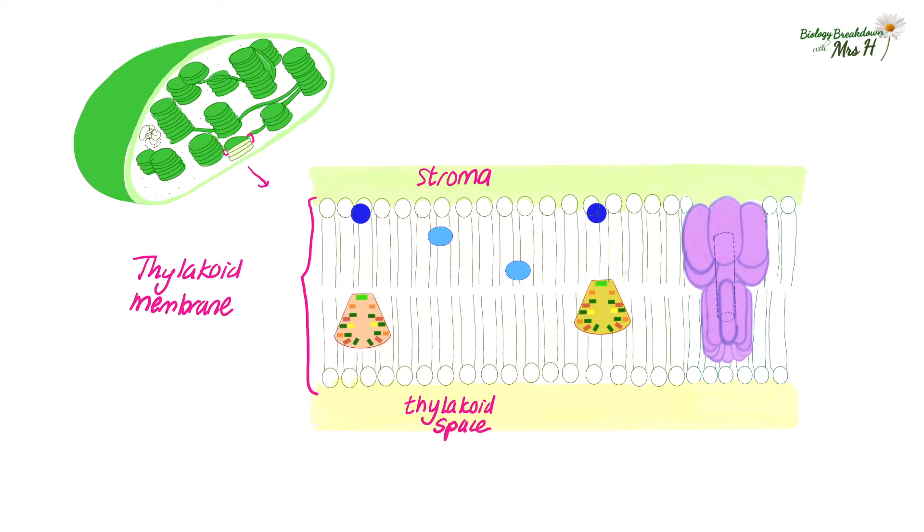Embedded in this phospholipid bilayer are two different types of photosystem, photosystem one and photosystem two. There'll be also some proteins and a very special protein which is the enzyme ATP synthase. And there'll be lots of these photosystems and proteins and ATP synthases throughout all the thylakoid membranes, in all the thylakoids, in all of the grana.